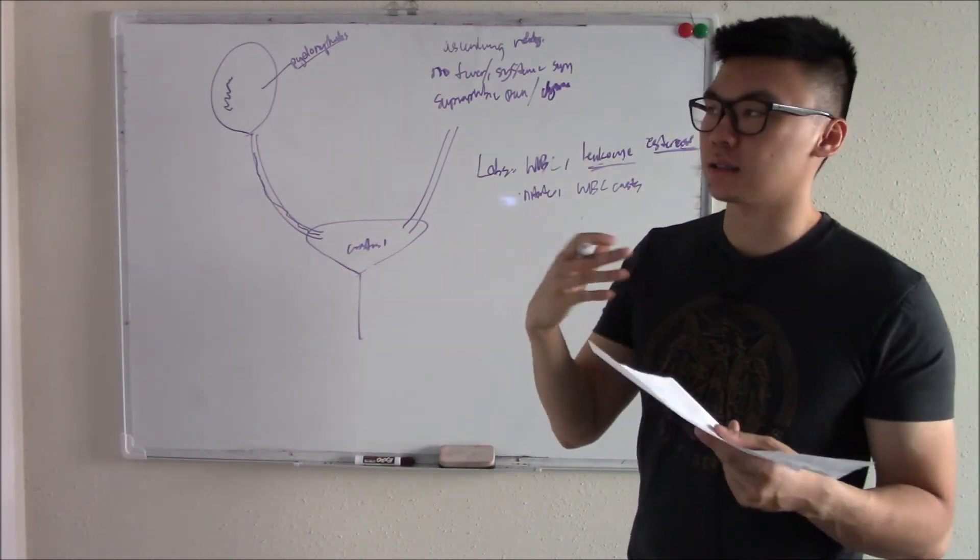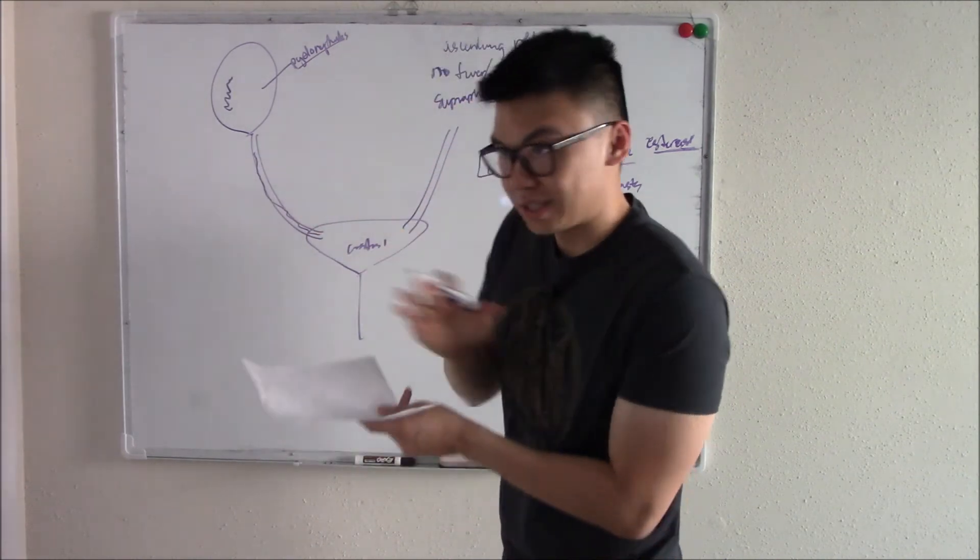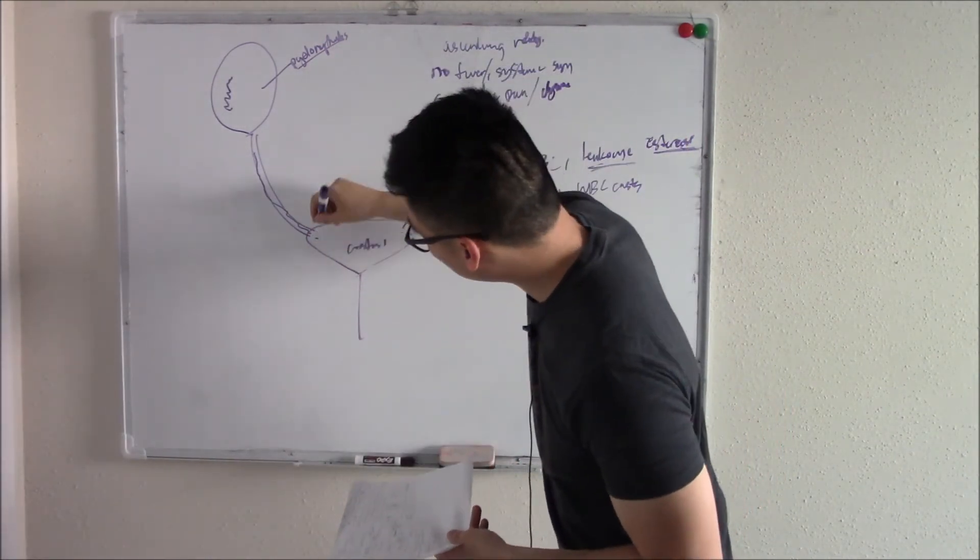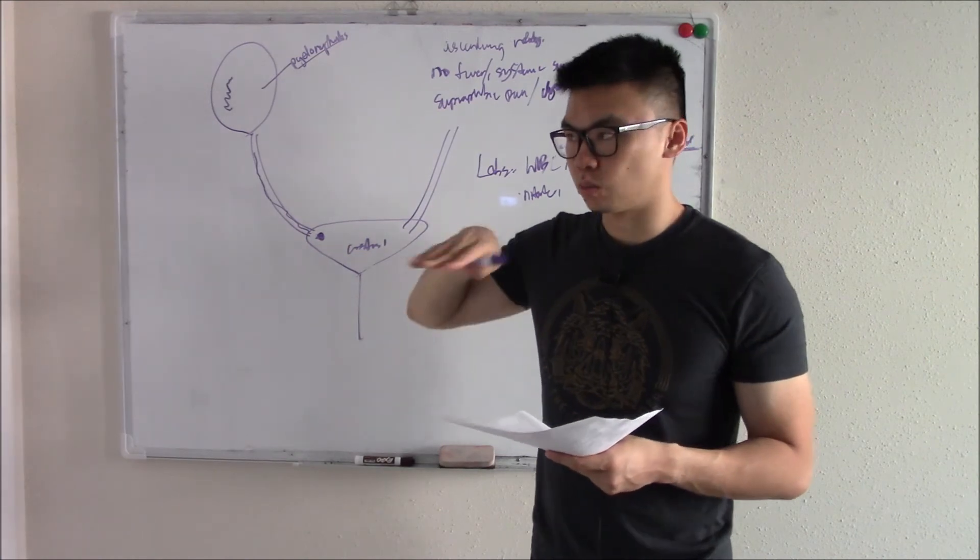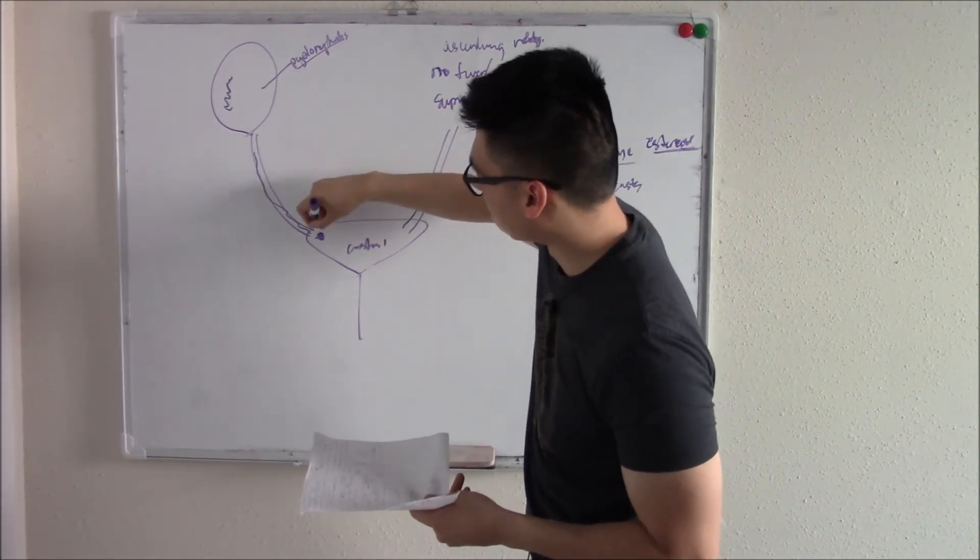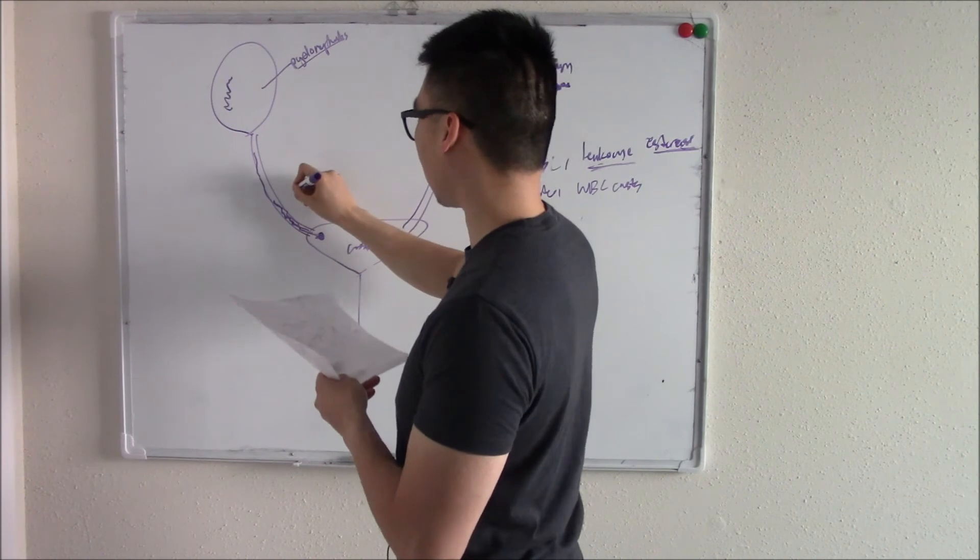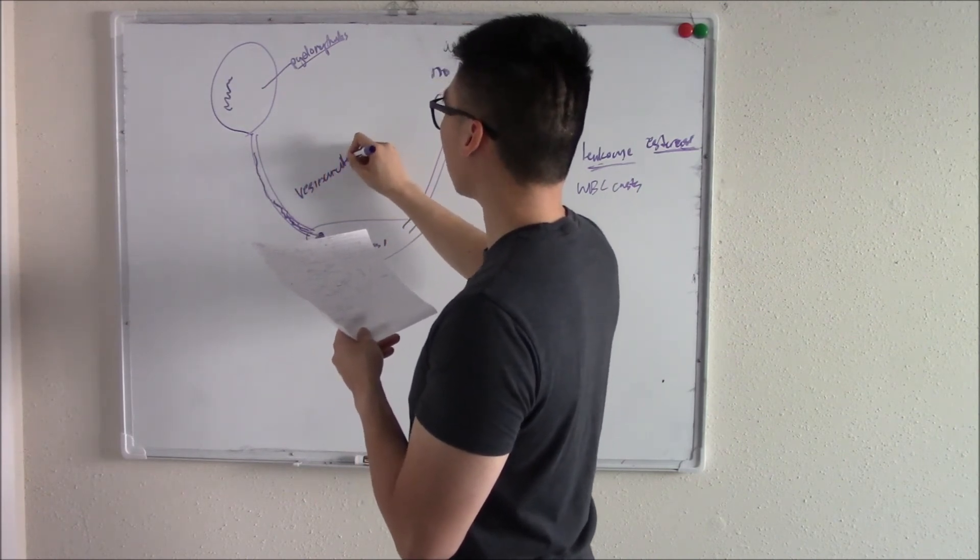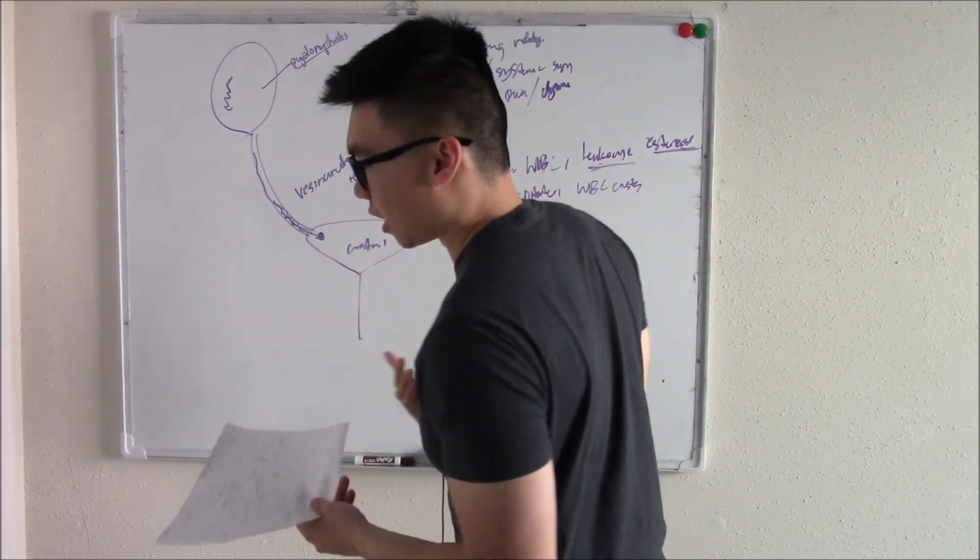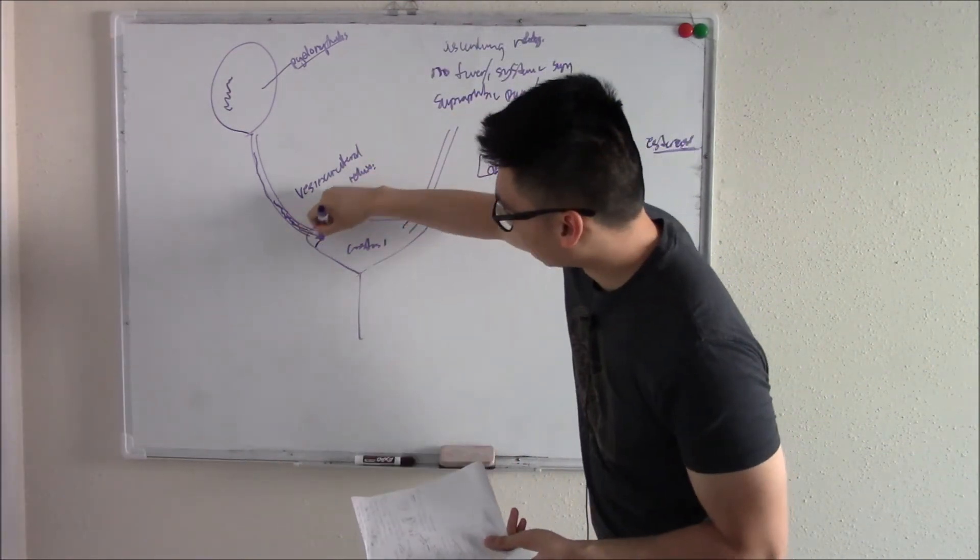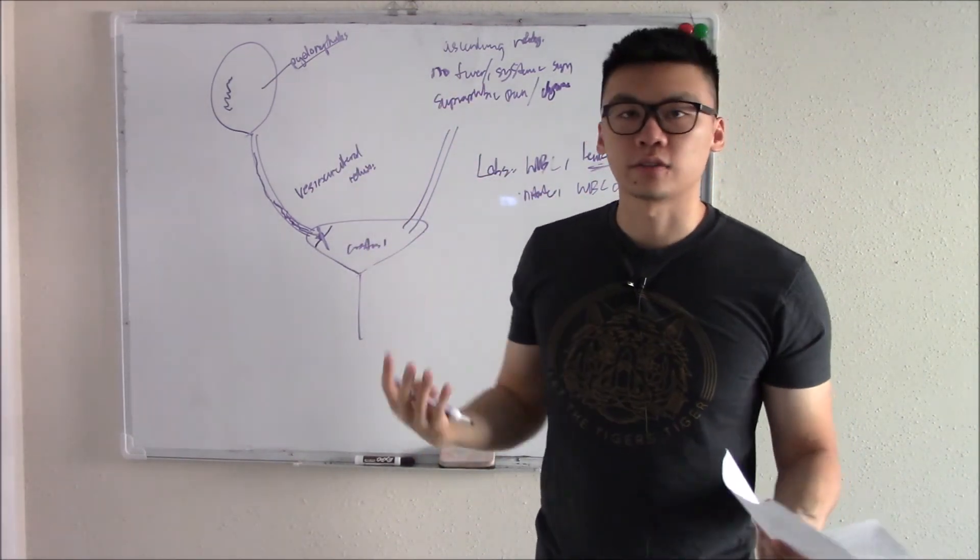Pyelonephritis happens when bacteria ascend up your ureters. Usually that shouldn't be the case. Don't you have a valve here that closes? If that valve doesn't close, then you get vesicoureteral reflux. You get bladder ureter reflux. Fluid can build up, and when fluid builds up, bacteria can travel up that fluid and cause pyelonephritis. Some people, if this valve is really defunct, they don't just get one-off infections. They might get monthly infections, chronic infections. Chronic infections are never good.